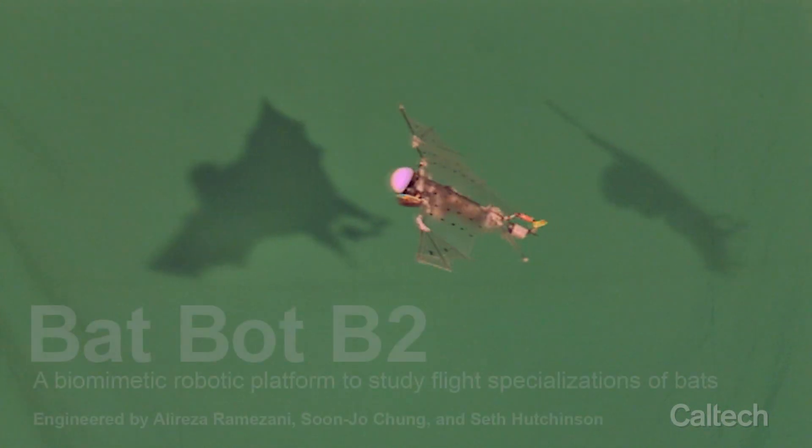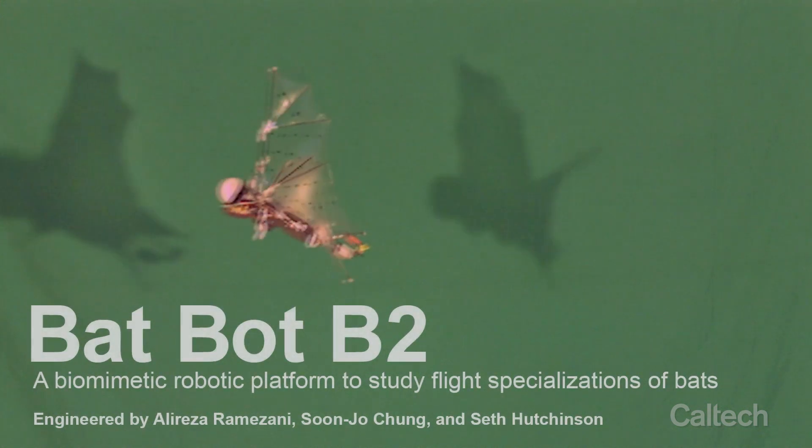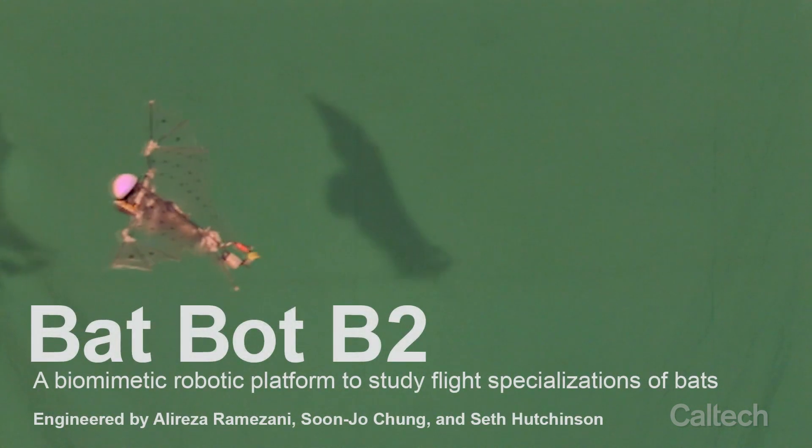We have created BatBot B2, a fully self-contained autonomous flying robot that weighs 93 grams, to mimic such morphological properties of bat wings.